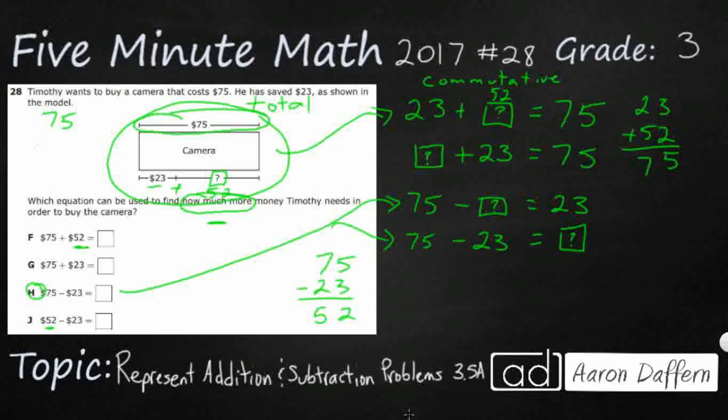75 minus, and then you might have gone straight down here to 23. And then that's going to equal your unknown number, which happens to be 52. And if you did that immediately without this adding over here on the side, then you would have got the same correct answer. So let's look at these wrong answers.